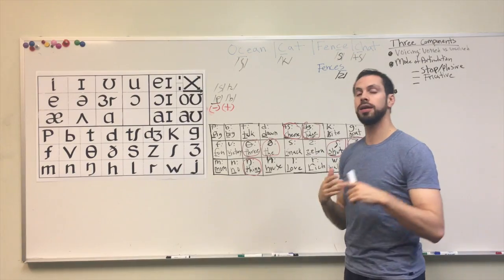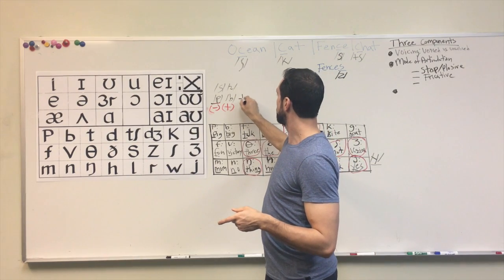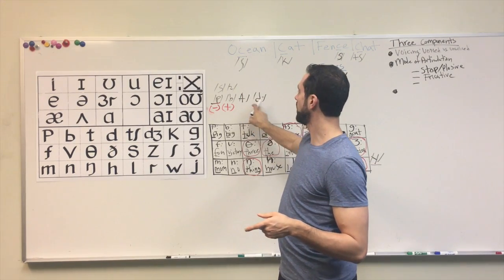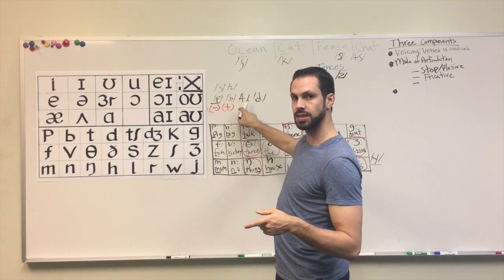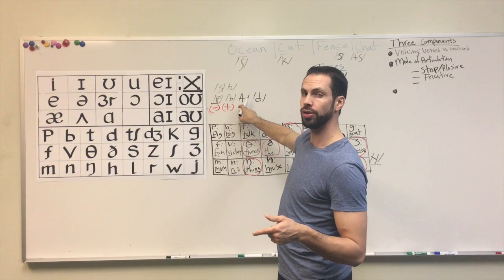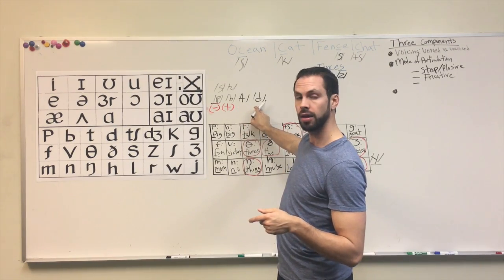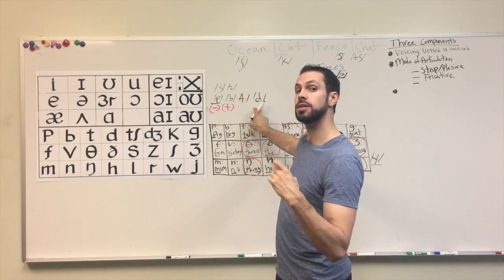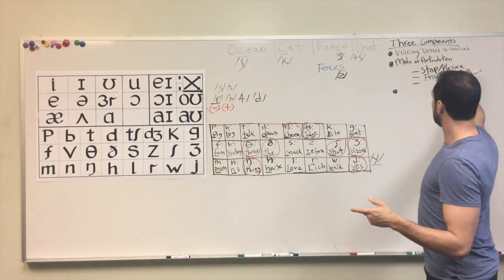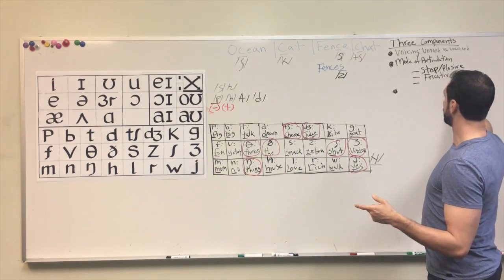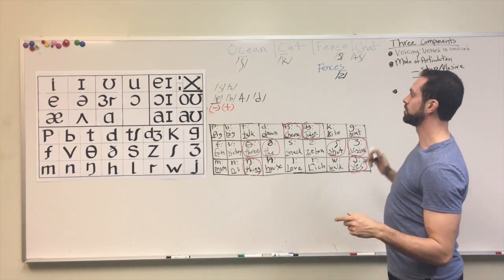We have another set of sounds as well. For example, let's take ta and da. Can you hold these sounds? You can't hold the T sound — you have to stop and release. So it's a ta, same as a duh — you can't hold it. You have to go duh, duh, duh. So these two sounds — stop, plosive, or fricative? Well, they're the first one, right? Either stop or plosive.